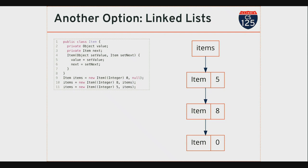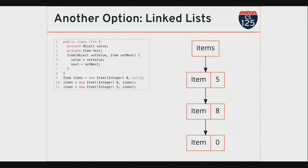Question: why is it going backwards? The first item put in was 0, second was 8, next was 5. The place where I'm adding items is at the beginning. When this line of code runs, items refers to the item with value 8. I create a new item with value 5, set its next reference to point to item 8, then save that as items. So 'items' always stores a reference to the last item I created, not the first. The easy place to add items to a linked list is at the beginning.